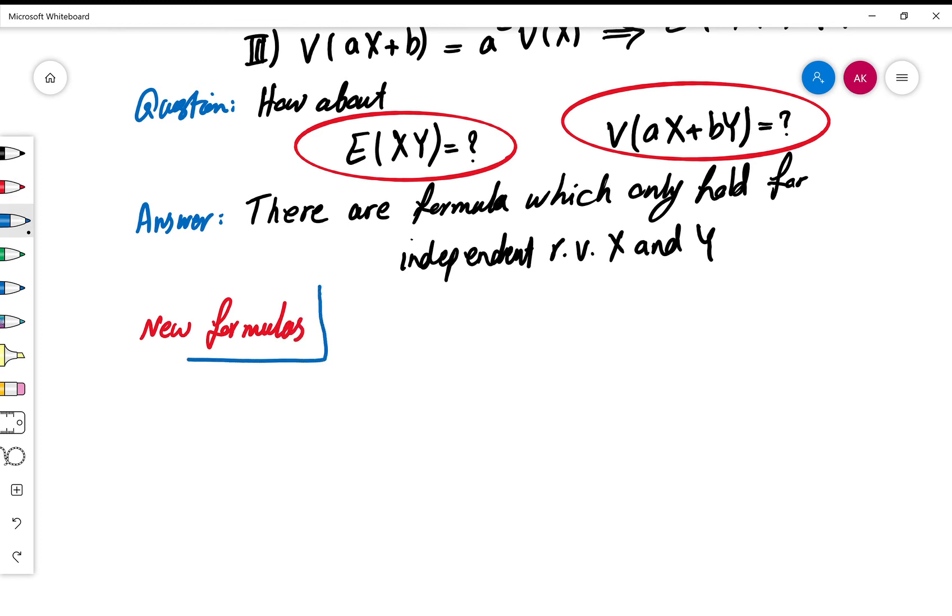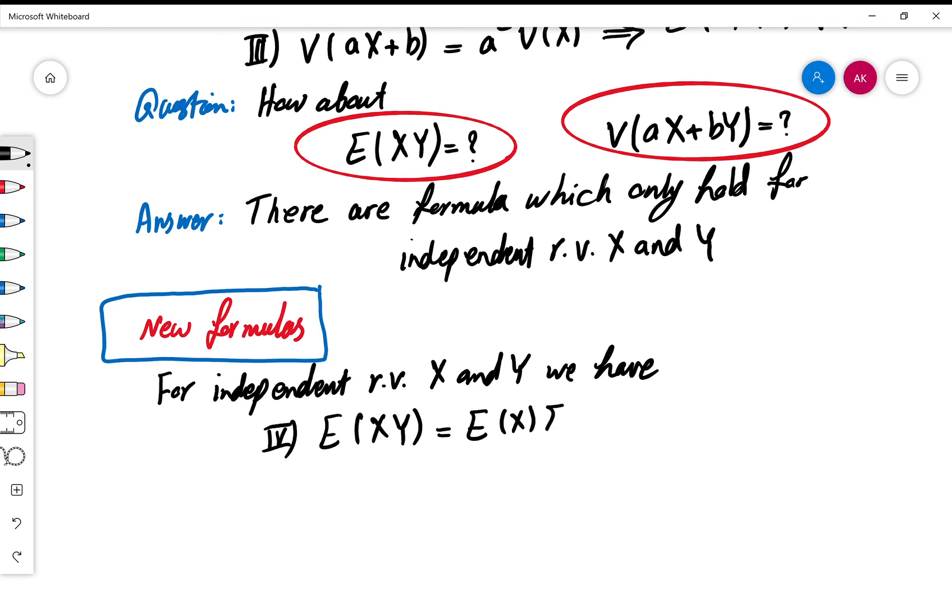Let me write down the formulas. The new formulas: for independent random variables X and Y we have these two new formulas. I'll continue writing the same numbers, up to three was given up there, and for four: E(XY) is equal to E(X)·E(Y).